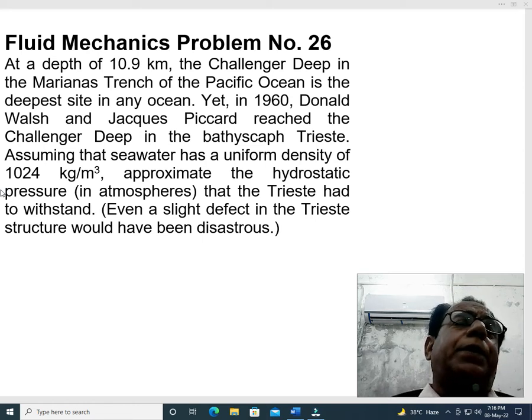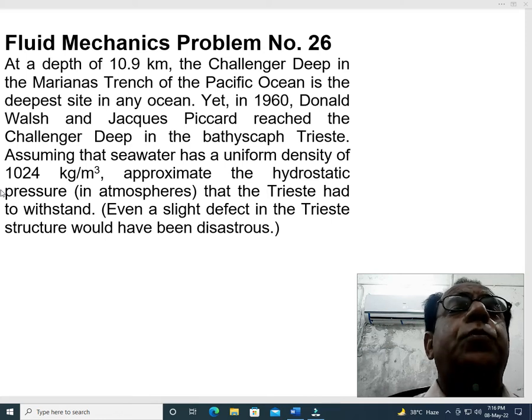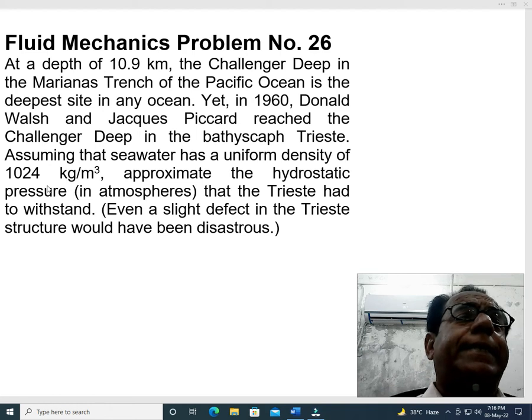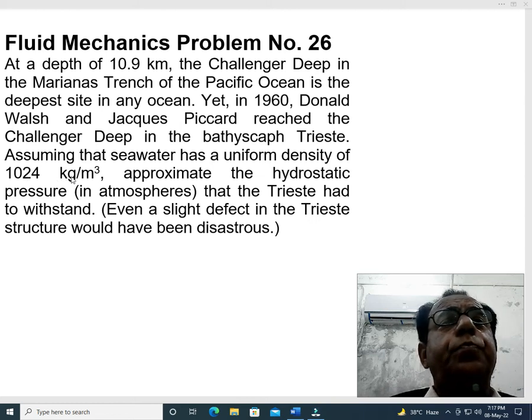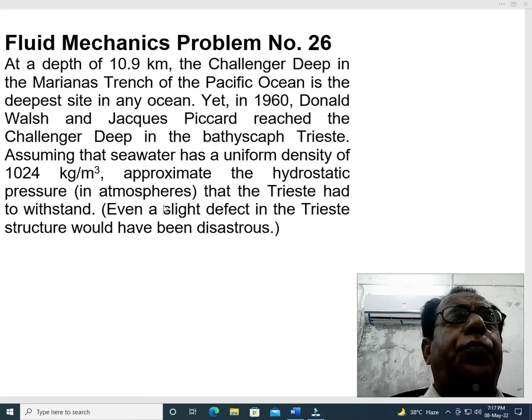First thing is depth. Depth and height are alternate terms. Depth may be considered downward, height may be considered upward. Second thing which is given is density. Assuming that the seawater has a uniform density of this. Even if this density is not given in the problem, it is a physical constant and can be found from the table of densities. Using these two values, we have to find the pressure and that pressure usually comes in Pascals but we have to convert that pressure in atmospheres.